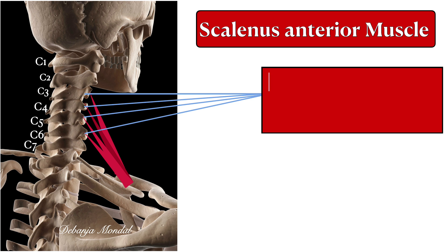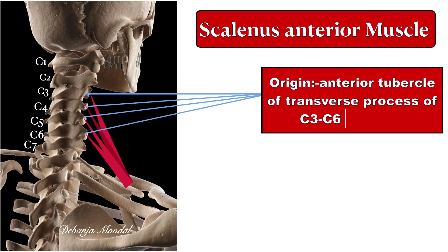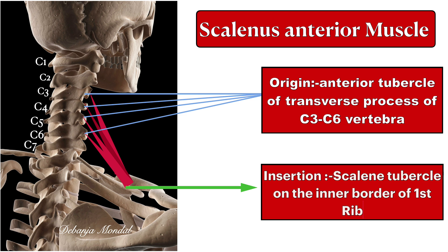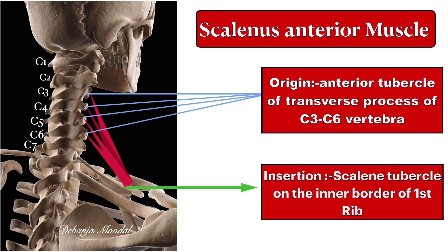Before performing the Scalene Relief Test, we should discuss the Scalene Muscle anatomy to give us a clear picture of the orientation and position of the first rib, clavicle, and Scalene Muscle. The Scalene Anterior Muscle takes its origin from the anterior tubercle of the transverse processes of C3 to C6 vertebra, and inserts on the scalene tubercle on the inner border of the first rib. Its action is to elevate the first rib, and it also acts as an accessory muscle of inspiration along with the sternocleidomastoid muscle.